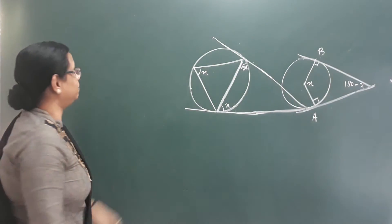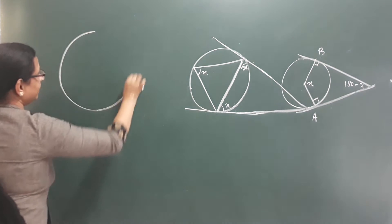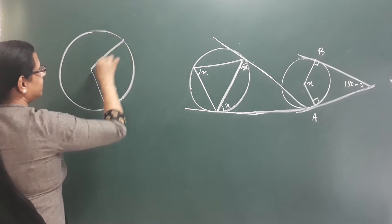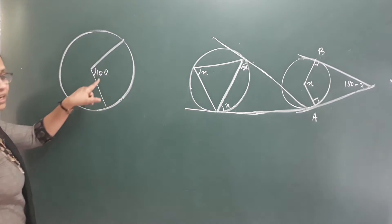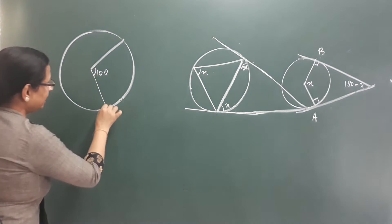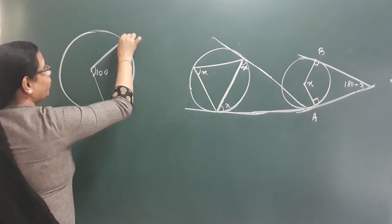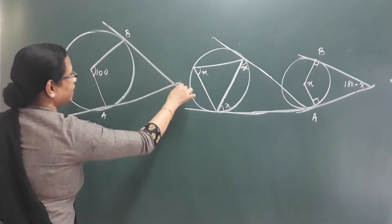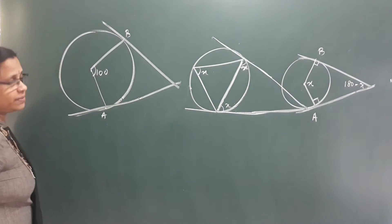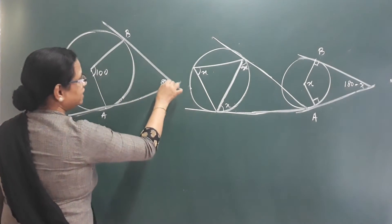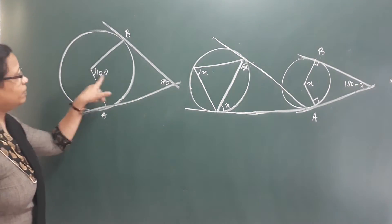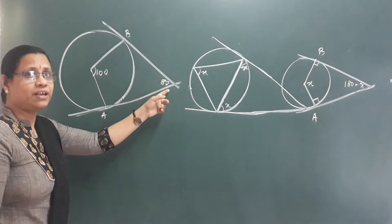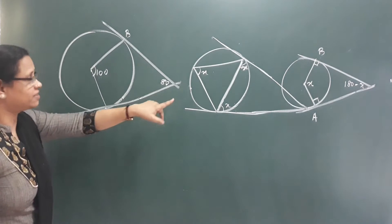Let's take an example. This is a circle. I take a circle with a central angle of 100. This is a point A and this is a point B. This is a tangent with two points.